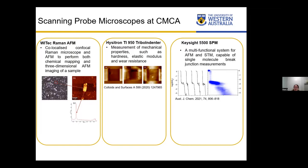We also have a K-site 5500 SPM, which is a multi-functional system for both AFM and STM studies. It has been well developed to conduct single molecule break junction measurements. For example, it can achieve high-speed conductance versus electrode displacement curves, which are very useful in molecular electronics research. I saw Emily and Stuart here — they know more about this study than me, so if you are interested, you can contact them as well.